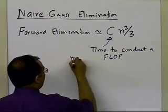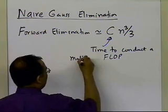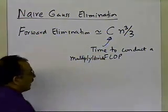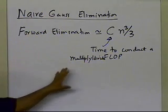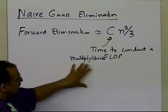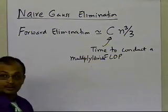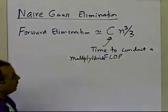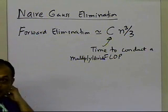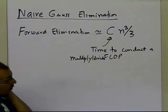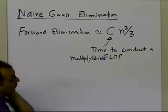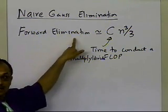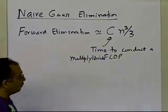By 'flop' I mean multiply or divide — a floating point operation. So c is the amount of time it takes to conduct a multiplication or division floating point operation. It is proportional to n cubed divided by 3, where n-by-n is the order of the A matrix. The time to do forward elimination in the Gaussian method will be proportional to cn³/3.